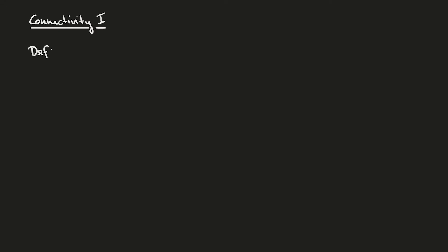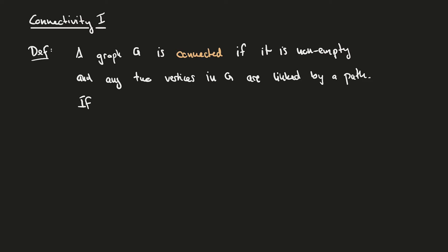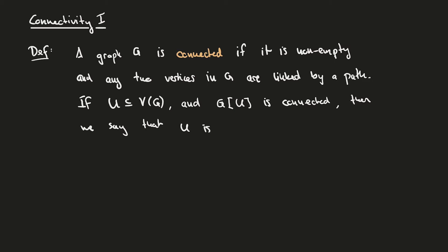Let's make this precise. A graph G is connected if it is non-empty, which means that it contains at least one vertex, and any two vertices in G are linked by a path. Moreover, if U is some subset of the vertices of G, and the graph induced by the set U is connected, then we say that U is connected in graph G.